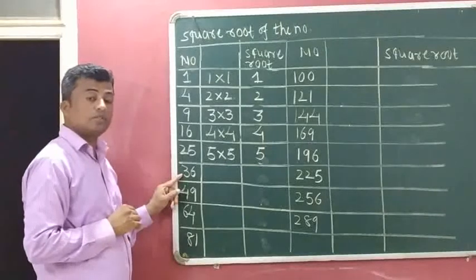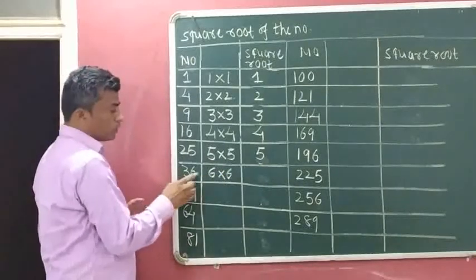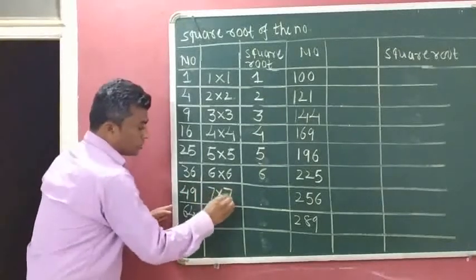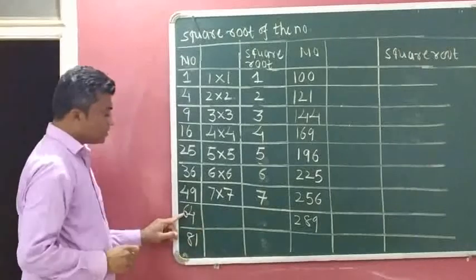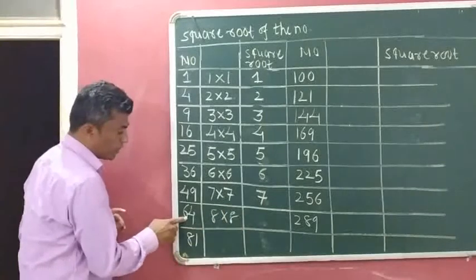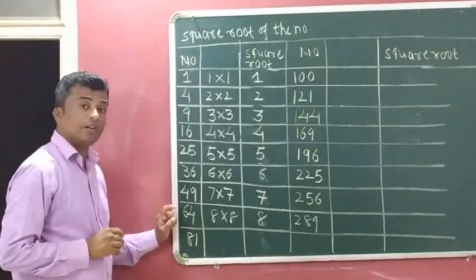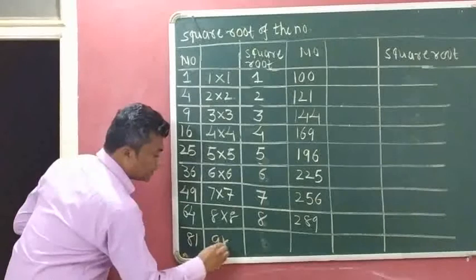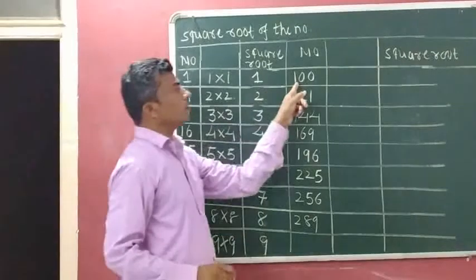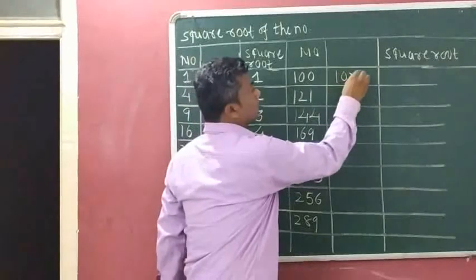Square root of 49: 7 times 7 is 49, so square root of 49 is 7. Square root of 64: 8 times 8 is 64, so square root of 64 is 8. Square root of 81: 9 times 9 is 81, so square root of 81 is 9. Square root of 100: 10 times 10 is 100, so square root of 100 is 10.